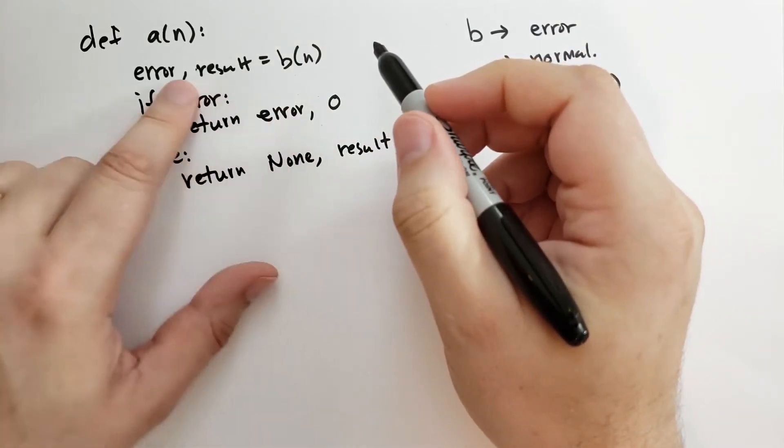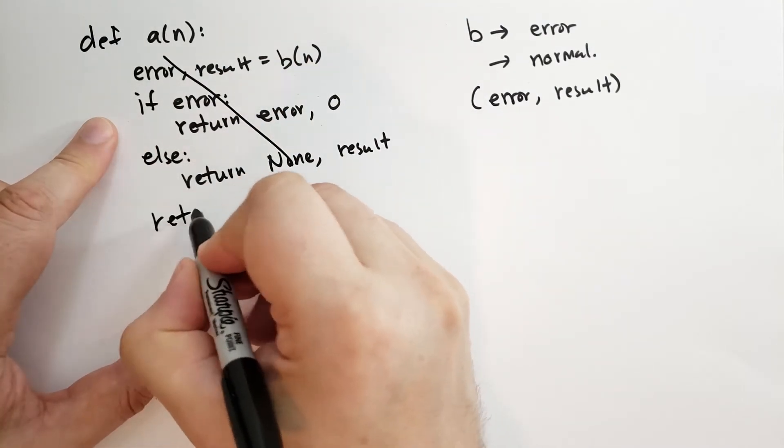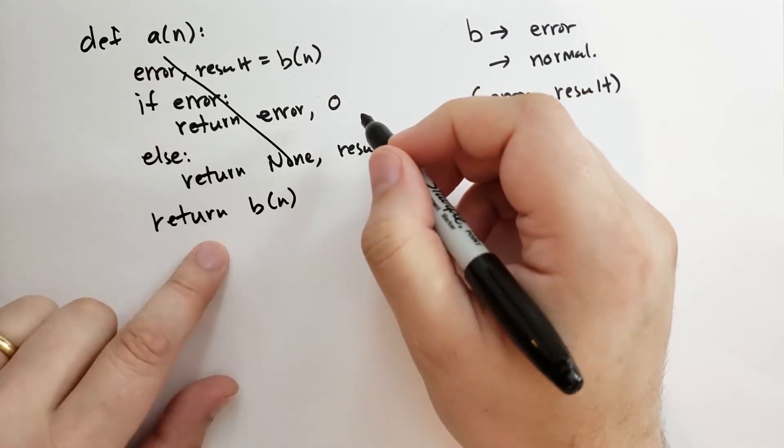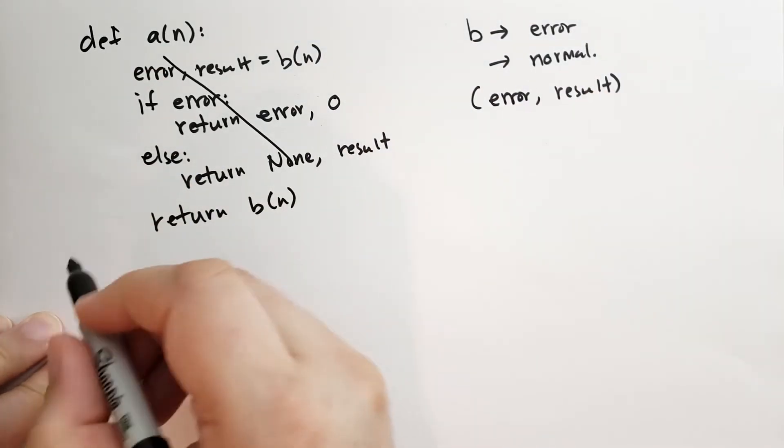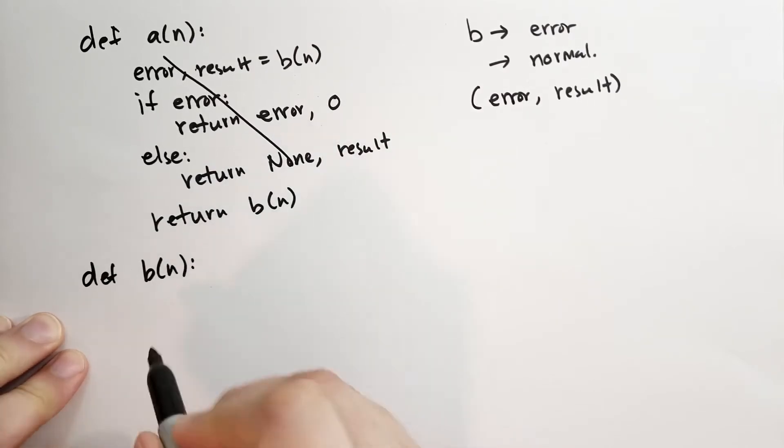You can see here that it doesn't really do anything with the value. So we can just substitute all this code for return b of n. But we need to remember that a of n isn't returning a single value. It's returning a pair of values. What about b of n? What is that doing?